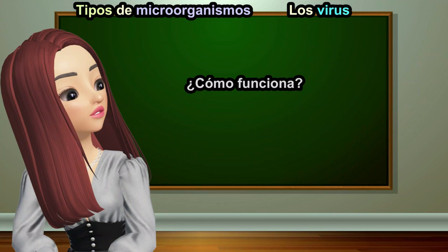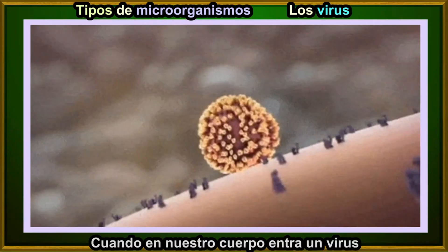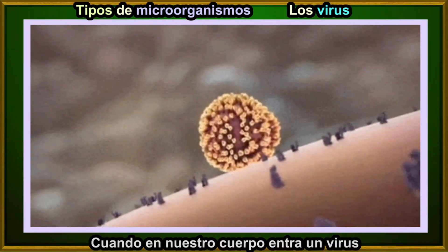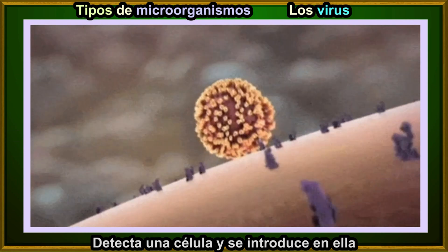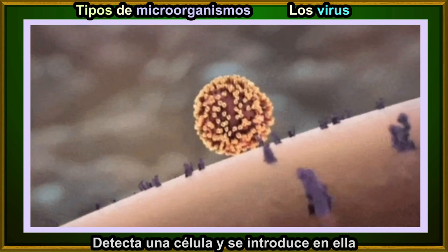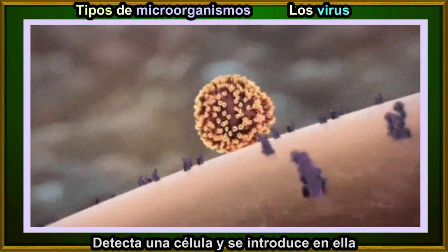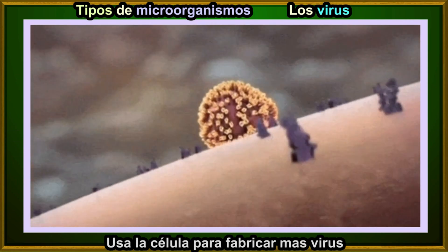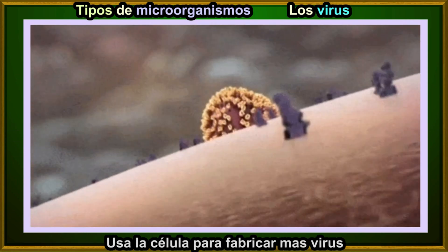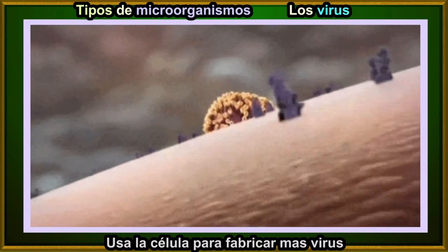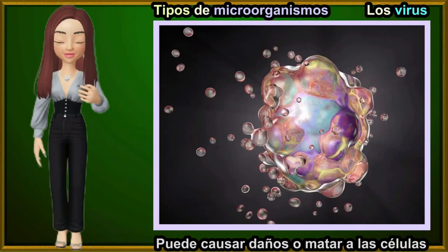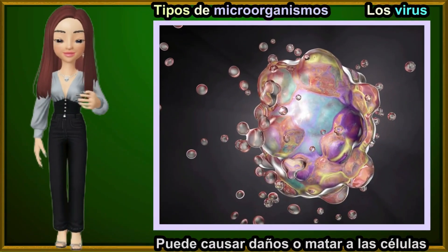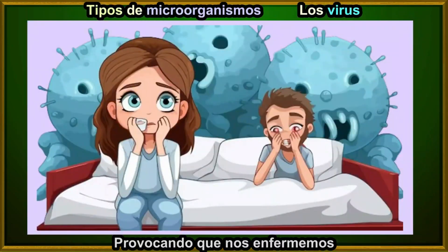How does this work? When a virus enters our body, it finds a cell and gets inside it. Once inside, it utilizes the cell as if it were a factory to produce more viruses. This has the potential to damage or even kill the cells, which in turn makes us sick.